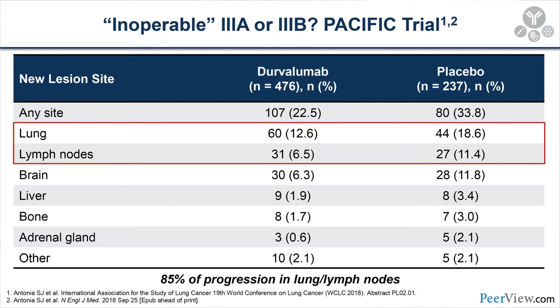When I think about PACIFIC and what it means for surgery, I think about how patients failed in that trial. We're actually getting better at systemic control with chemotherapy and durvalumab, but most progression — 85% — was in the lung and lymph nodes. This suggests there may be a role for better local control in patients with stage 3 disease, which raises the question of whether surgery combined with immunotherapy could do even better.